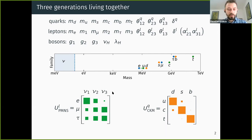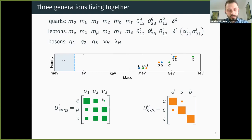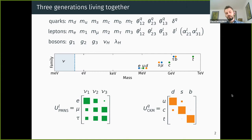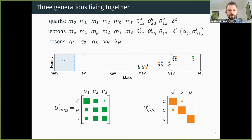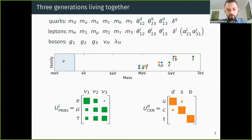In the case of the lepton mixing matrix, the PMNS matrix, it's not so close to diagonal but still exhibits some structure — for example, the θ₁₃ entry is very small, the second row is almost equal to the third row, and all entries in the second column are approximately equal. These peculiar patterns constitute the flavor puzzle, which doesn't lead to any inconsistencies but suggests there is something we are missing.